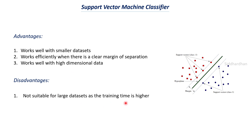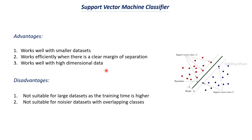The disadvantages of SVM are that it is not suitable for larger datasets because training time is higher. If the dataset has many data points and many dimensions, training takes a lot of time, so SVM is generally used with smaller datasets. It is also not suitable for noisy datasets with overlapping classes. When the two classes have data points that almost overlap, the margin is very low, and the model cannot clearly define the separation. Noisy data — datasets containing many outliers and errors — also pose a challenge for SVM.